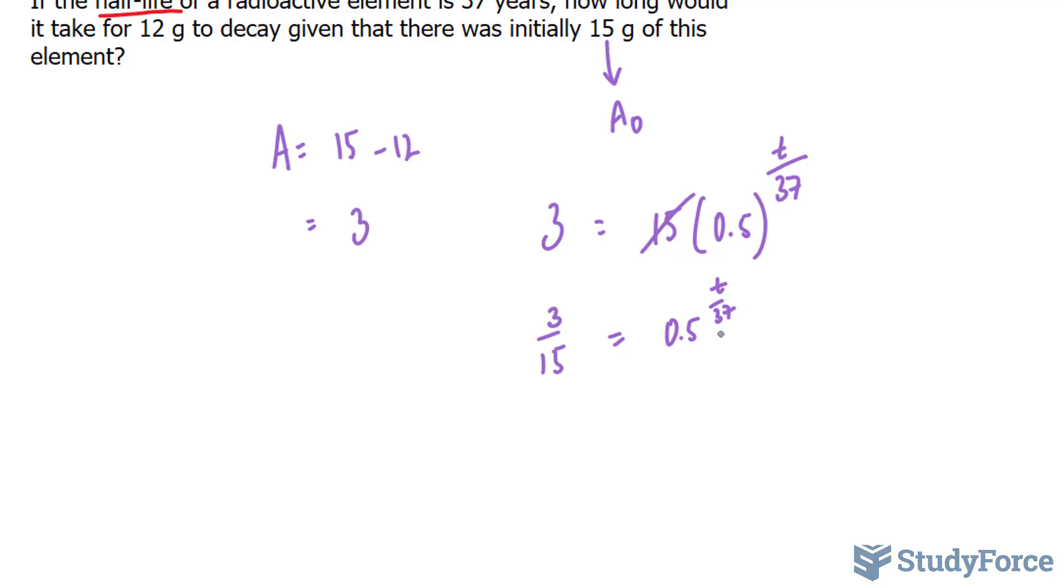The next step is to ln both sides, and if we ln both sides, we end up with ln 1 over 5. I've just reduced 3 over 15 to 1 over 5. You can leave it the way it is. ln is equal to ln of 0.5 to the power of t over 37.